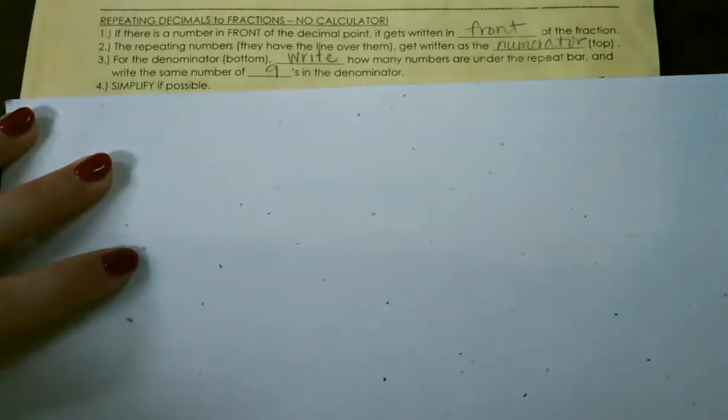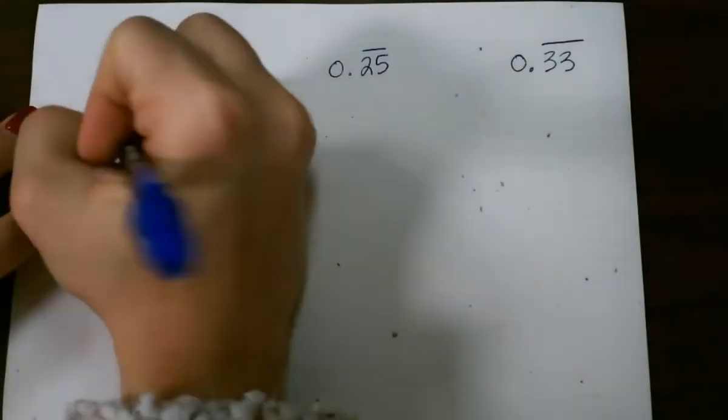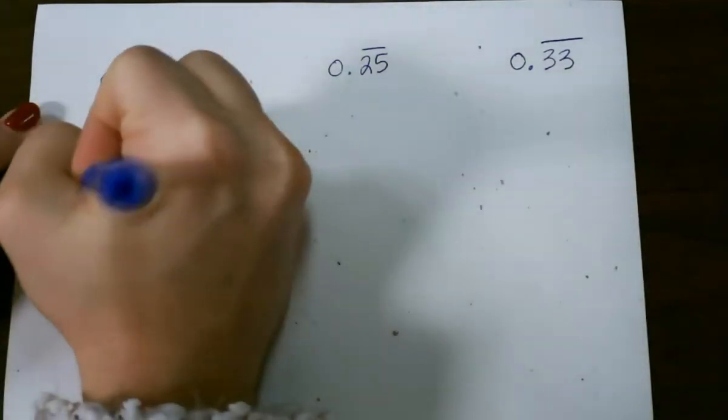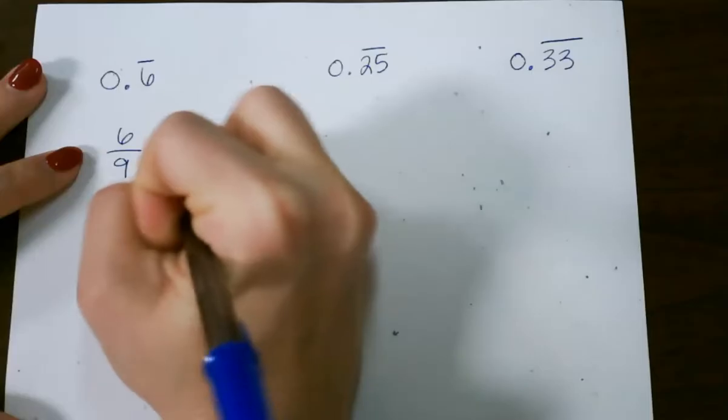And always simplify if possible. So for our first example, 6 becomes the numerator, and since I only have one digit, I have one 9 for my denominator, and then I simplify this to 2 thirds.